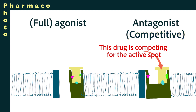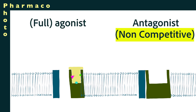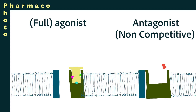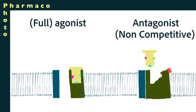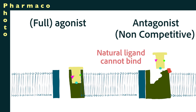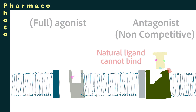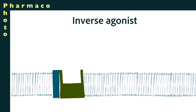There can also be non-competitive antagonists. In that case the ligand binding is irreversible or nearly irreversible. One example is when the antagonist binds to a portion of the receptor protein other than the binding site — it binds to the protein and changes the binding site so that the natural ligand simply cannot bind. That is one example of a non-competitive antagonist, and it is usually irreversible or nearly irreversible.